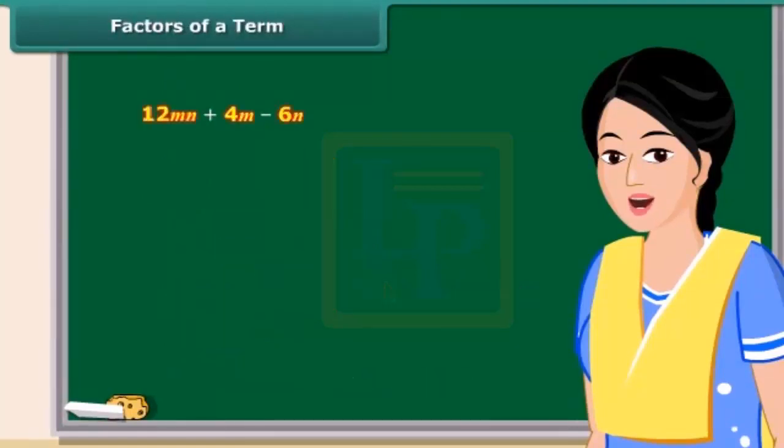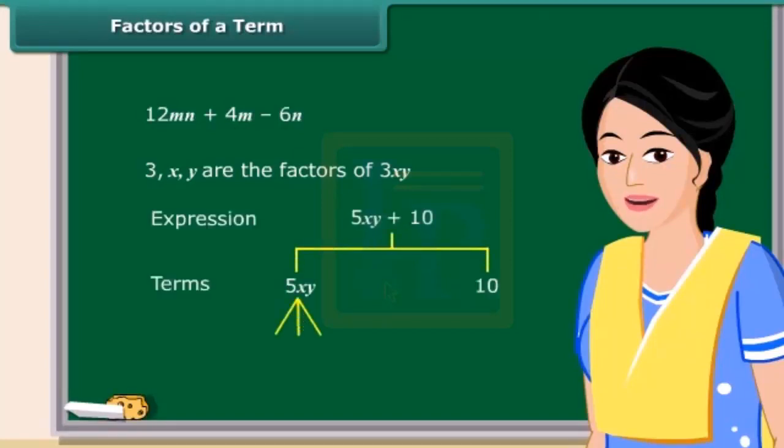A term is a product of its factors. But what are these factors? Look at this term. We say that 3, x and y are the factors of the term 3xy. Do you know we can also represent 5xy plus 10 by a tree diagram? See, the dotted lines are used here for factors and continuous lines for terms. Remember, the factors cannot be further factorized.